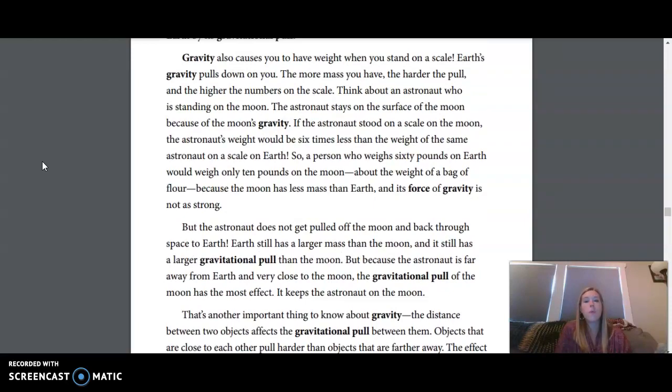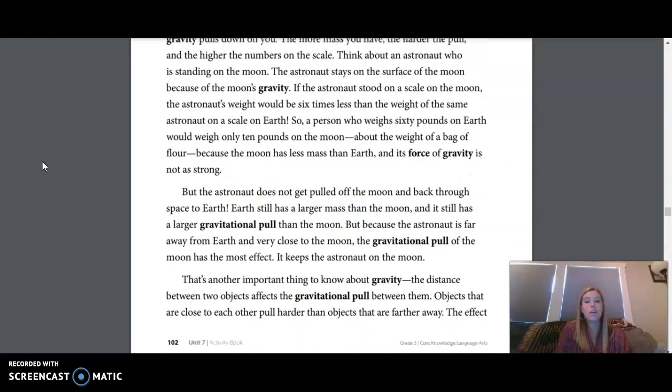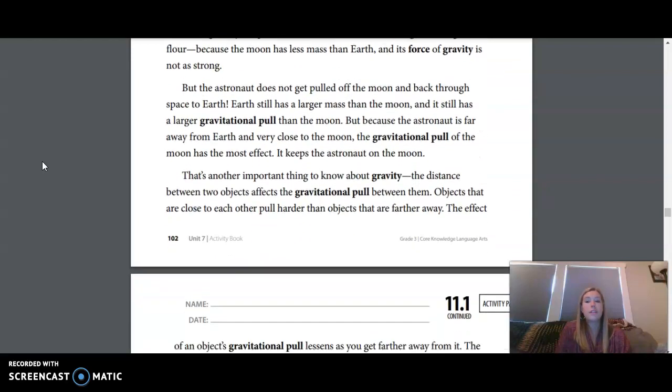Gravity also causes you to have weight when you stand on a scale. Earth's gravity pulls you down. The more mass you have, the harder you pull, and the higher the numbers on the scale. Think about an astronaut who's standing on the Moon. The astronaut stays on the surface of the Moon because of the Moon's gravity. If the astronaut stood on a scale on the Moon, the astronaut's weight would be six times less than the weight of the same astronaut on a scale on Earth. So a person who weighs 60 pounds on Earth would weigh only 10 pounds on the Moon, about the weight of a bag of flour. Because the Moon has less mass than Earth, and its force of gravity is not as strong.